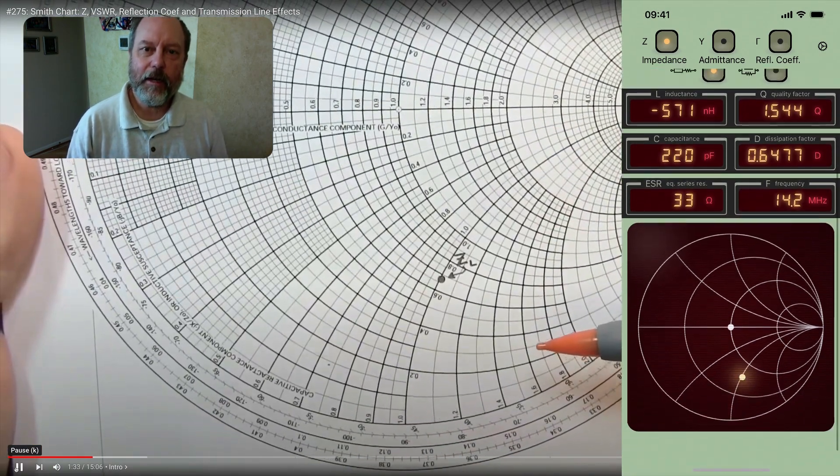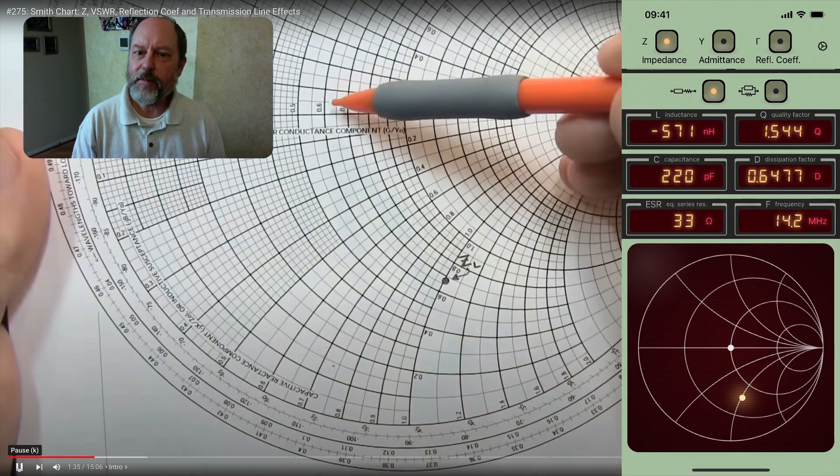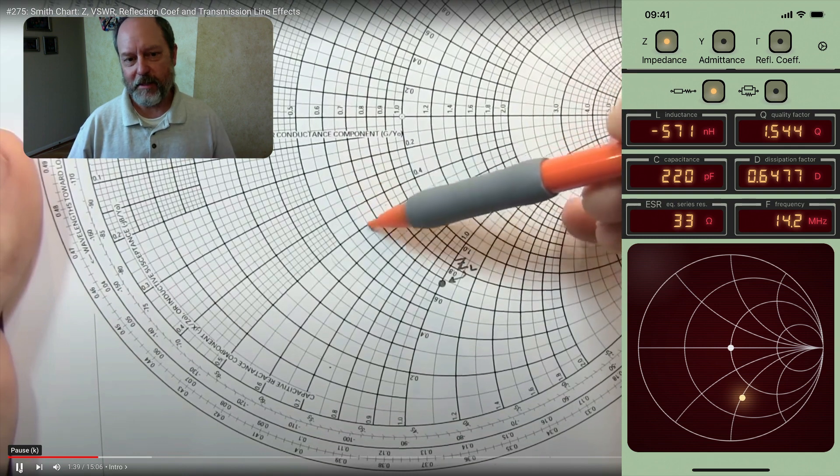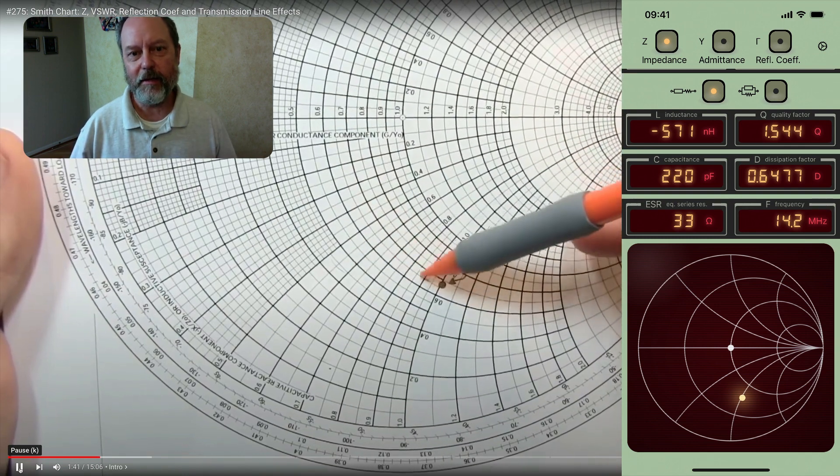And here you can see if you look at where the app has plotted the impedance of this load in the Smith chart, you can see that it matches pretty much exactly the same place that Alan has plotted it on his Smith chart.